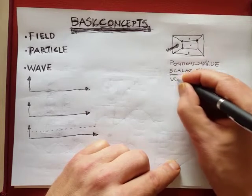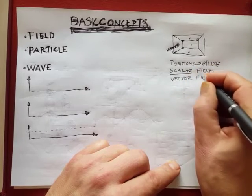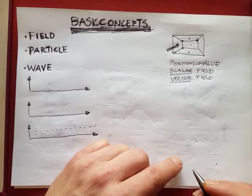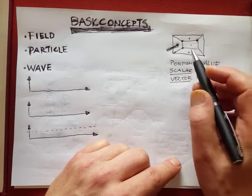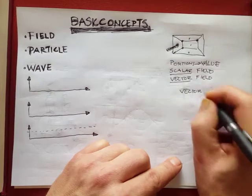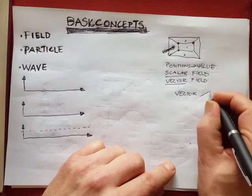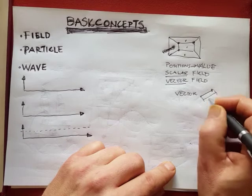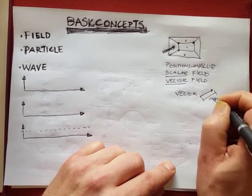And then you have a vector field. What is a vector field? Well, a vector field is a field where every position has a vector associated to it. A vector is something with a direction and a magnitude.